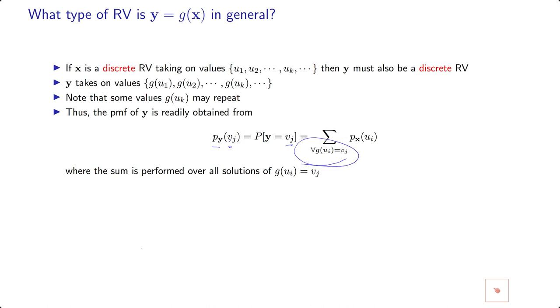What happens is that this is the X axis with U1, U2, U3, etc. At this point you have P1, here you have a mass of P2, and so on. These points are mapped to the Y axis. Let's say this is V1, this is V2, V3, etc.